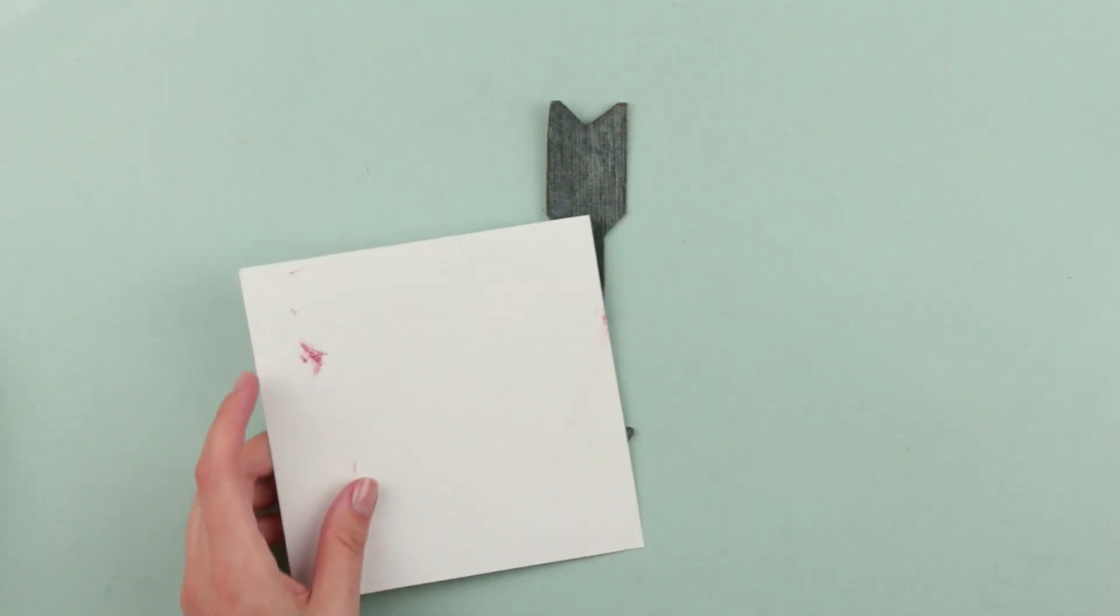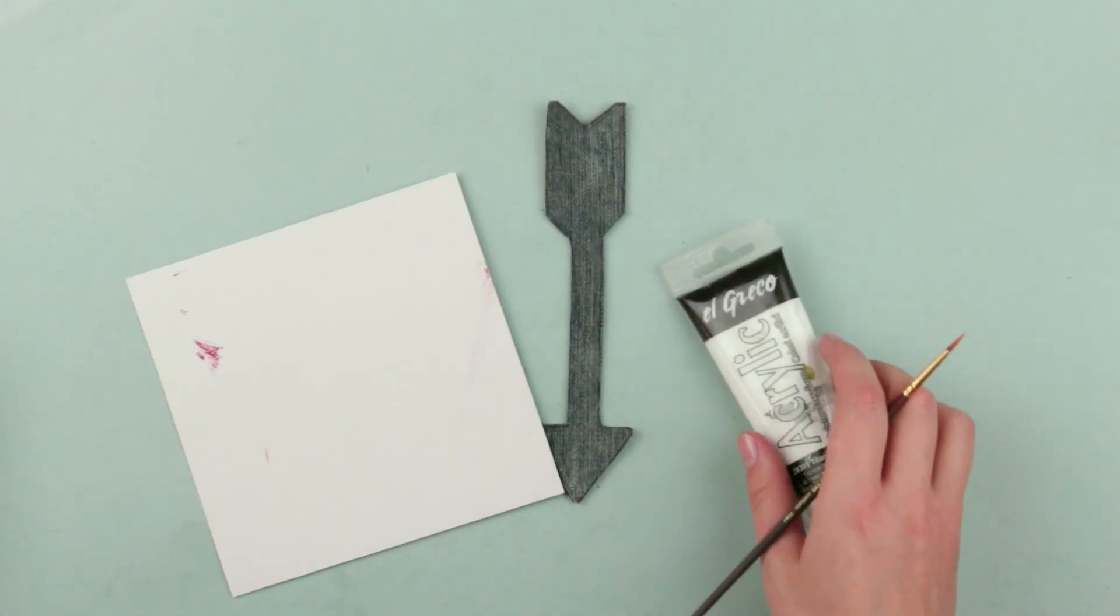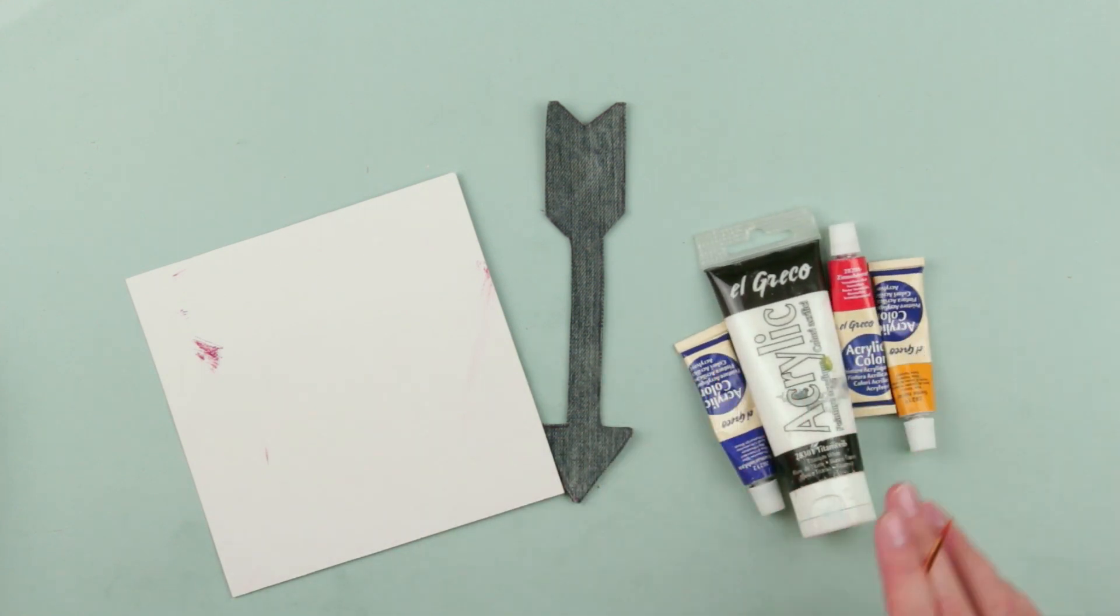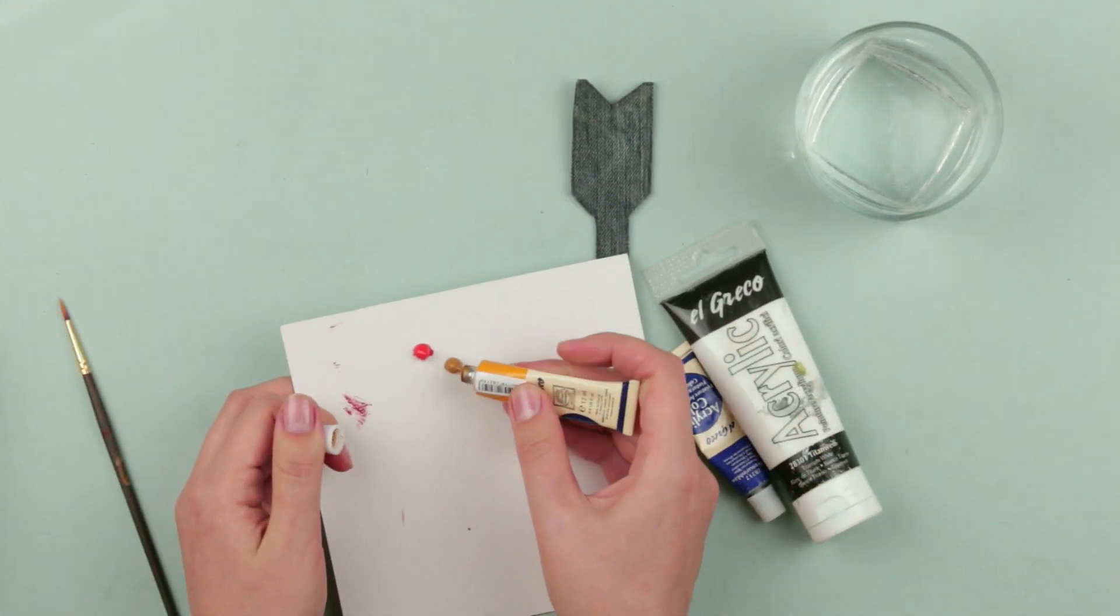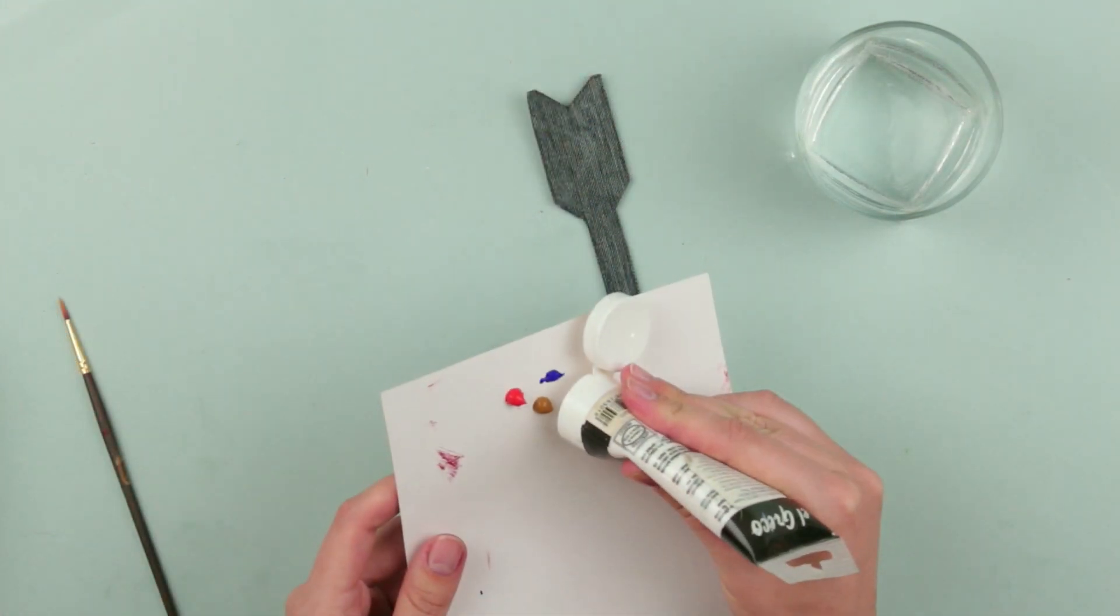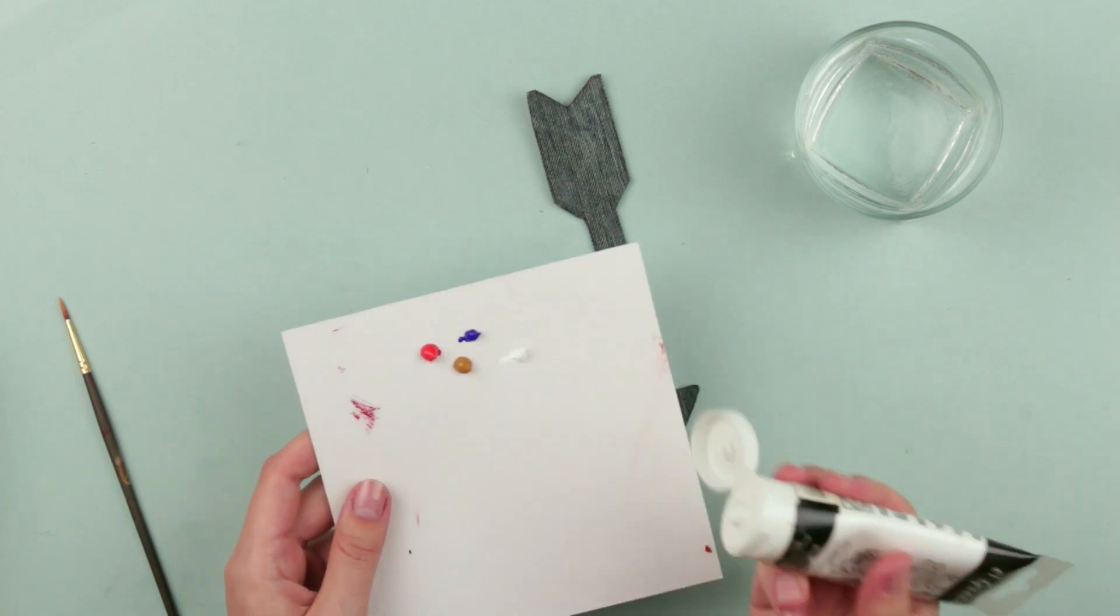Decorate the arrow in an American Indian traditional art style. We'll need acrylic paints, a thin brush, cardboard for a palette, and water. Squeeze the paints onto the palette. Take the basic colors: red, yellow, blue, and white.